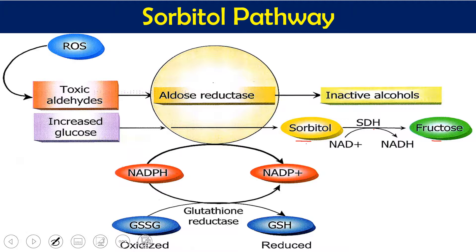When cells swell up, they may burst or their normal physiology and functions will be affected, rendering them non-functional. Since aldose reductase is mainly present in eye cells, those retinal cells become non-functional due to sorbitol accumulation and its hygroscopic nature. Second, when too much glucose is converted to sorbitol, a large amount of NADPH is consumed. NADPH is an important cofactor and there are limited biochemical pathways that generate it, such as the HMP shunt.